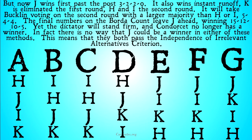J wins first-past-the-post three to two to two to zero — so first-past-the-post does not meet the Independence of Irrelevant Alternatives. J also wins instant runoff: K is eliminated in the first round, and then H and I are eliminated on the second round because they're tied for two votes. J will take Buckland voting on the second round with a larger majority than H or I, five to four to four. So none of these so far meet Independence of Irrelevant Alternatives.